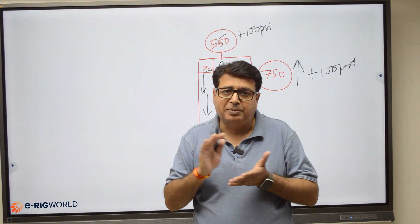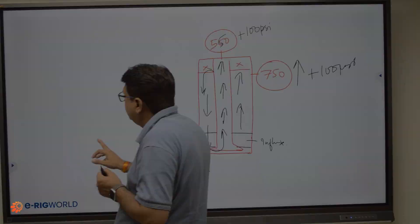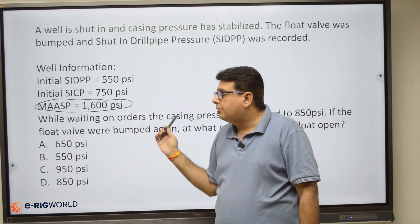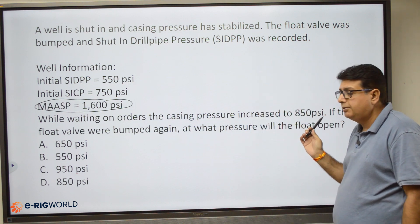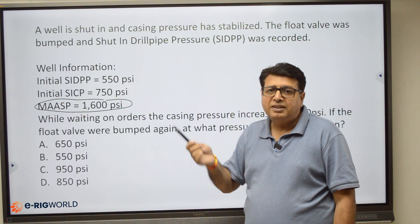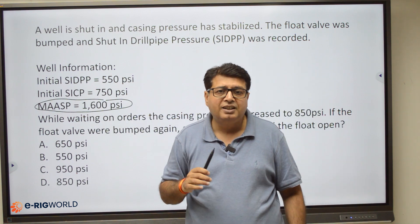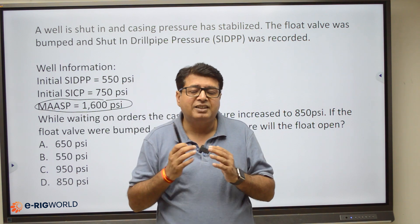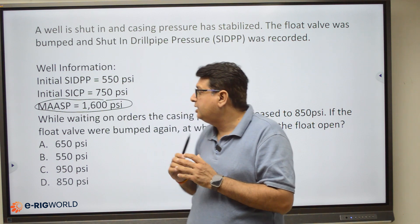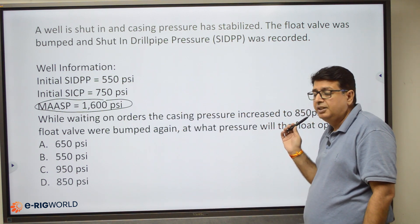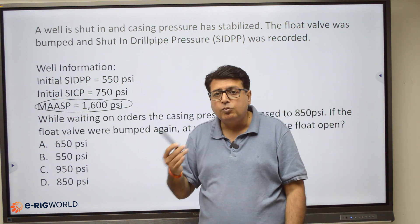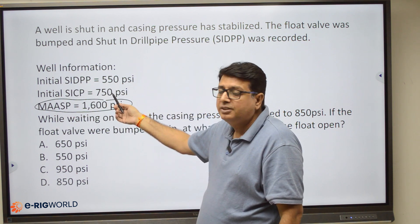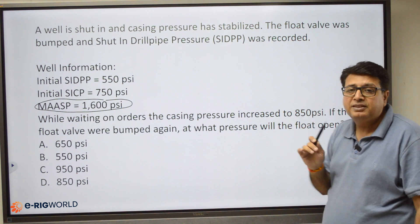The internal pressure of the bubble will remain constant because there is no space for the bubble to expand. Applying this to the question: initial drill pipe pressure was 550, initial casing pressure was 750, and while waiting, casing pressure increased to 850. This means due to closed-well gas migration, all pressures in the wellbore increase by equal value — only the internal pressure of the bubble remains constant.